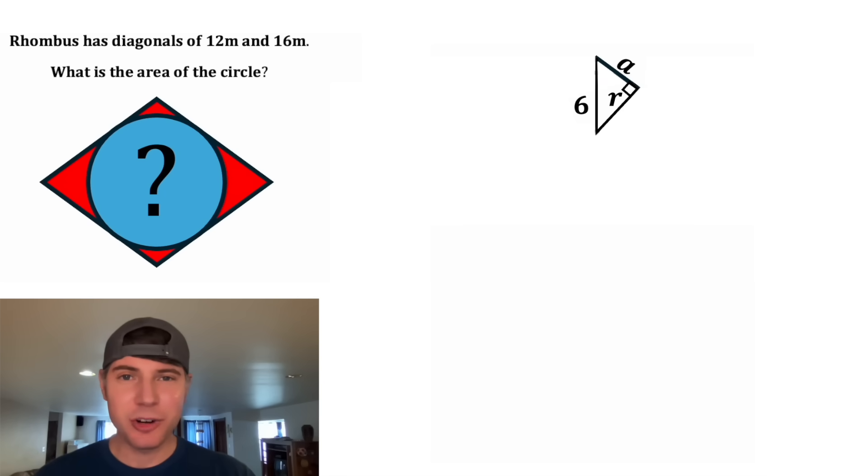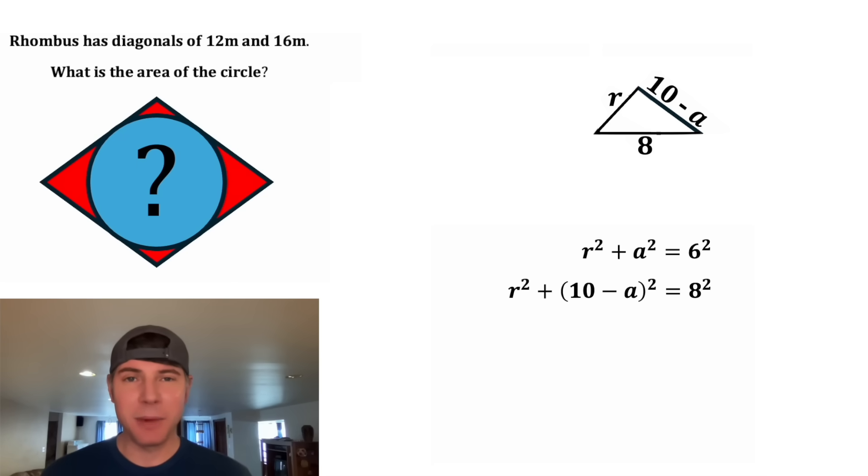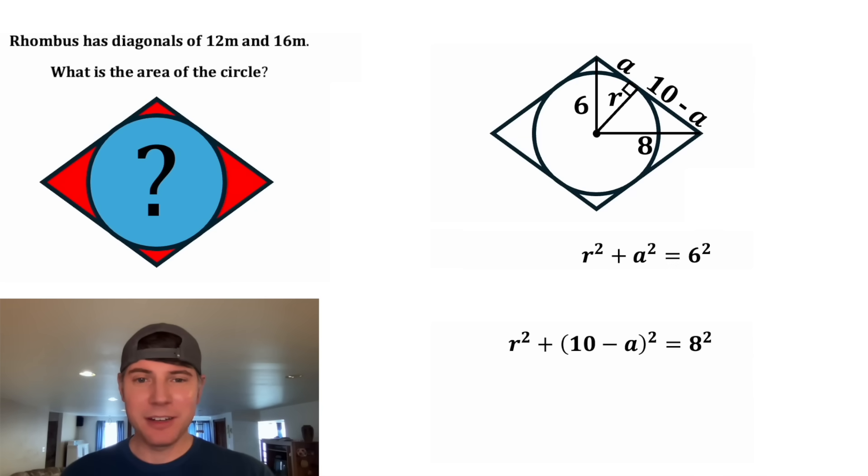And now we can do Pythagorean theorem two more times. Let's focus on this triangle first. It'll give us R squared plus A squared is equal to 6 squared. And next, let's do this other triangle, and it will give us R squared plus the quantity 10 minus A squared is equal to 8 squared. And then let's clean these up a little bit. On this top one, 6 squared is equal to 36, and then we can bring down everything else.